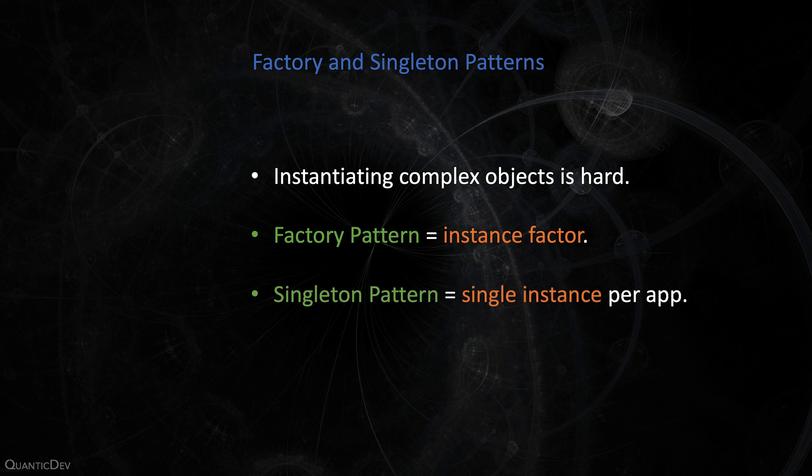You will have a single object handling the dependencies for class instances you need. If you need only a single instance of an object to exist during the entire lifetime of your program, you can use the singleton pattern instead. Basically, you create a static class with a static member — a read-only field that encapsulates the object instance you need. After that, you can access the object from anywhere in your app without having to create an instance of it. Remember, this makes testing harder.